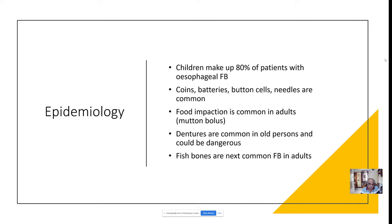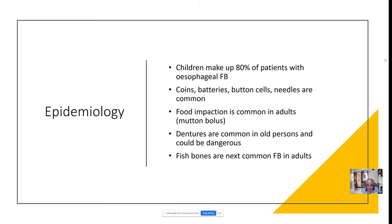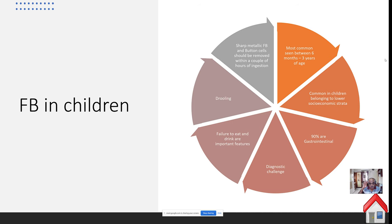Dentures are very dangerous to remove because they are large and cause excessive spasm of the cricopharynx muscle. Attempts to remove a denture can traumatize the esophageal mucosa, so denture removal is a little bit tricky. Fish bones happen to be the next common foreign body seen in adults.